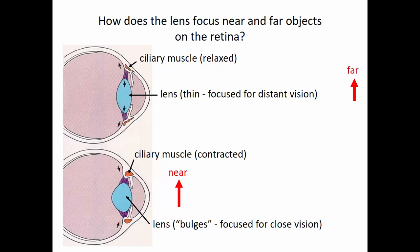Stare out into space past your computer screen, as far as your eyes can see — across the room or out a window. As you're looking out into space as far as you can, your ciliary muscles are totally relaxed, and your lens is as flat as it possibly can be. That allows us to see and focus things in the distance. If you have 20-20 vision and you're looking far away, things should be in focus — not blurry.